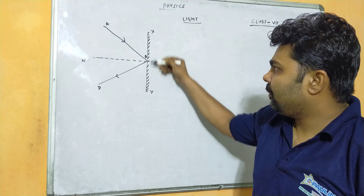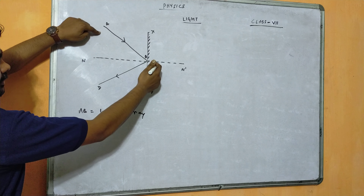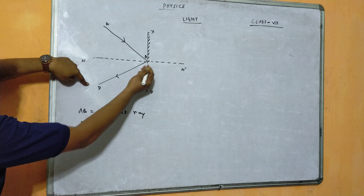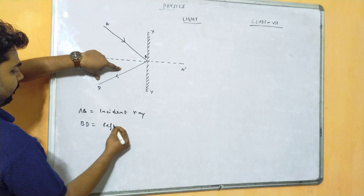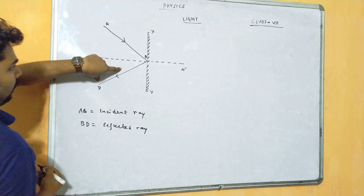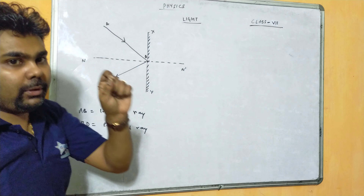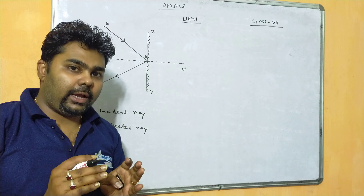This was a plane mirror, that is XY. The front side is polished and the back side is silver-coated. Whenever light falls on the plane mirror, let us consider AB is the incident ray. When an incident ray falls on a plane surface, that is the mirror, it gets reflected in the same medium in the form of BD — that is the reflected ray of light.